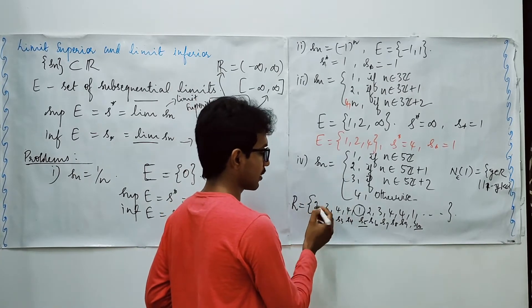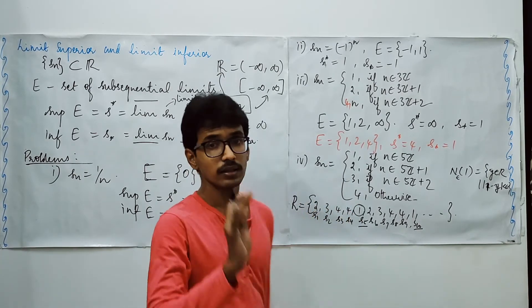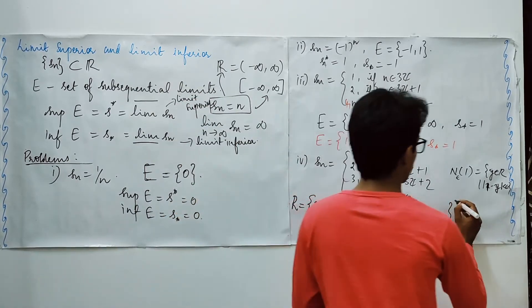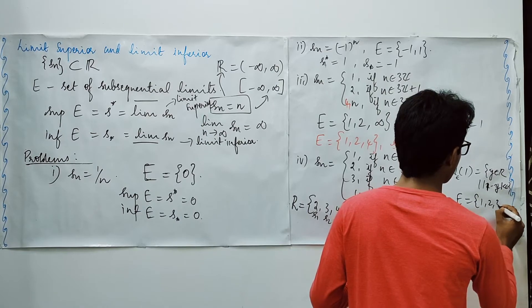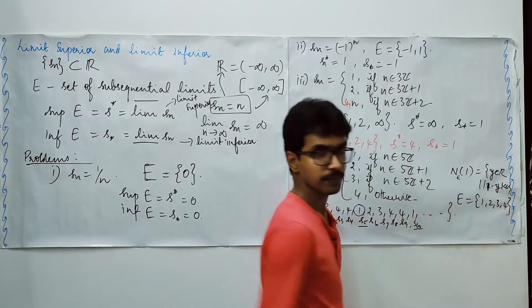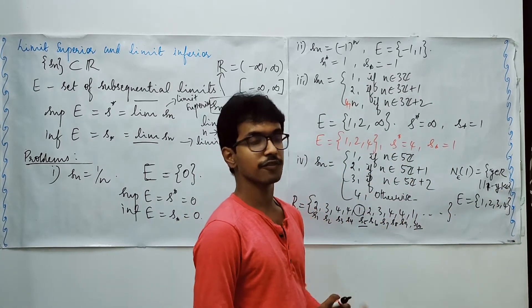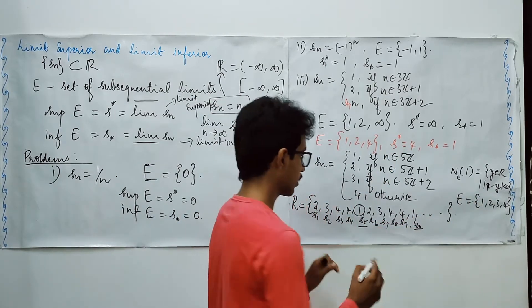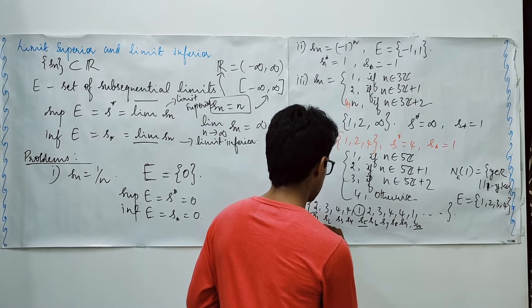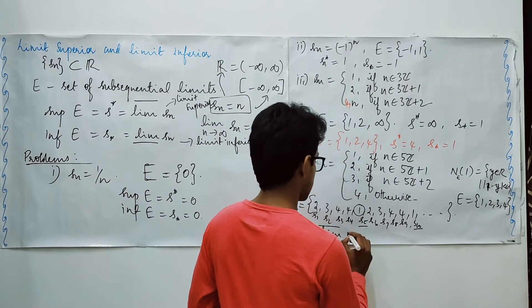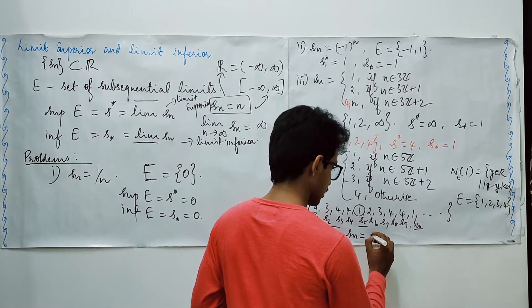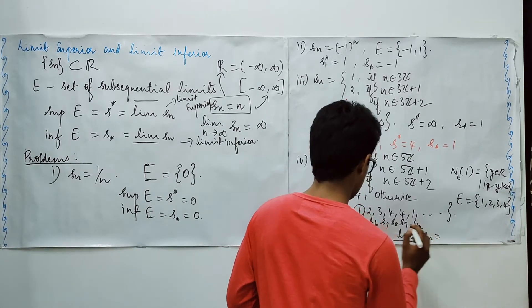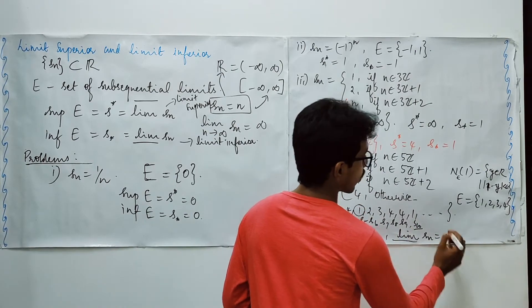Similarly, all the entries — 2, 3, 4, and 1 — these four points are limit points of this range. I have collected the limit points of this set. Now I will look at the supremum and infimum of these sets. That is, the limit upper bar of Sn is 4, and the limit lower bar of Sn is 1.